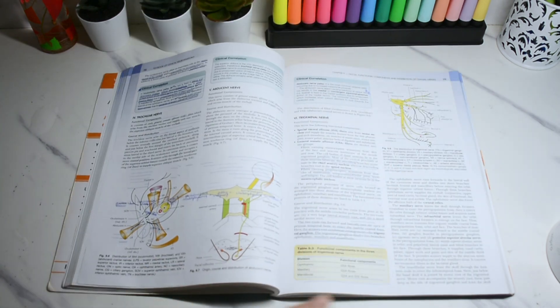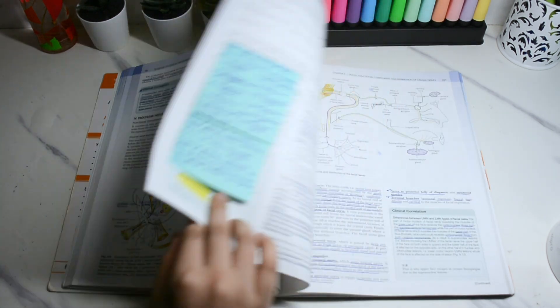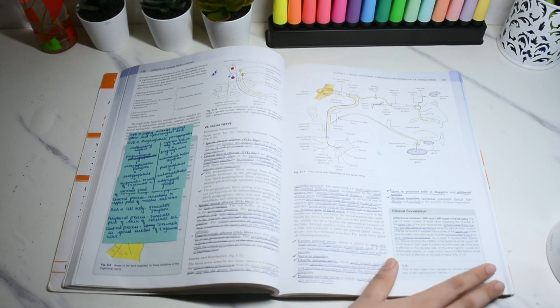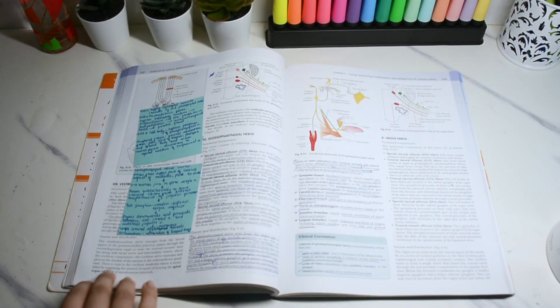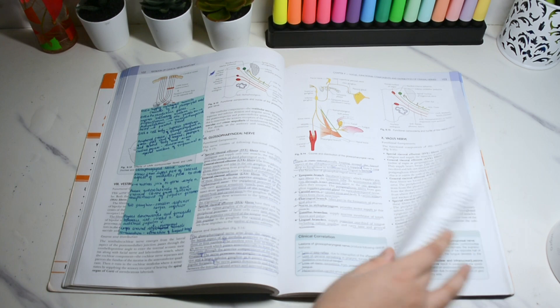It will help you with neuro anatomy as well as nervous system in physiology and later medicine. The standard book is Snell's Clinical Neuro Anatomy.